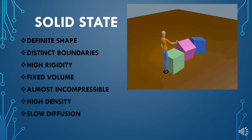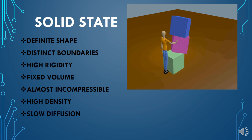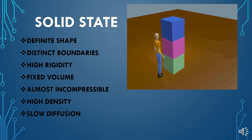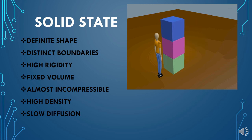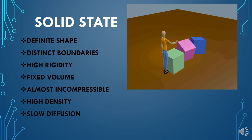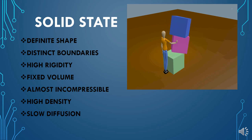Now let us consider the properties of the solid state. Based on the arrangement of particles in solids, first of all, solids have a definite shape. The shape of solids cannot be changed because of the very close packing of particles — particles remain within fixed boundaries and do not easily change their shape. That is why they have a definite shape. Second, they have distinct boundaries. Because of very close packing and very strong forces of attraction, solids have distinct boundaries, which also gives them a definite shape.